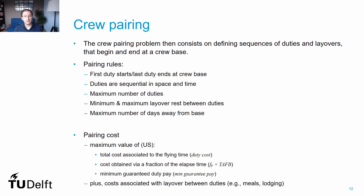Let me highlight the complexity these rules also bring for the control stage during operations when dealing with disruptions. For instance, if we have a rule that crews arriving after 8pm cannot fly the next day, and we have a pairing with a flight arriving at 7pm followed by a flight the next day starting at noon — if we suffer a delay of more than one hour, we'll have to remove that noon flight from the crew's roster and find another crew to cover it. We won't discuss these operational levels in this course, but it's good to keep in mind when solving the crew scheduling problem.